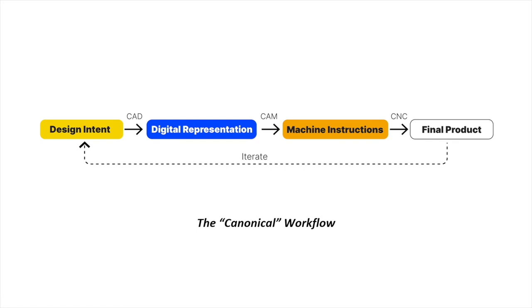A workflow is the series of steps that someone follows in order to move from intent to final product. The domain of manufacturing and fabrication has a traditional conception of a fabrication workflow: first you have computer aided design that moves from design intent to a digital representation, then computer aided manufacturing to convert that digital representation into machine instructions, and finally you execute those machine instructions on a CNC machine. For our research purposes, we term these steps the canonical workflow, and this abstraction has also been widely adopted by HCI fabrication researchers.